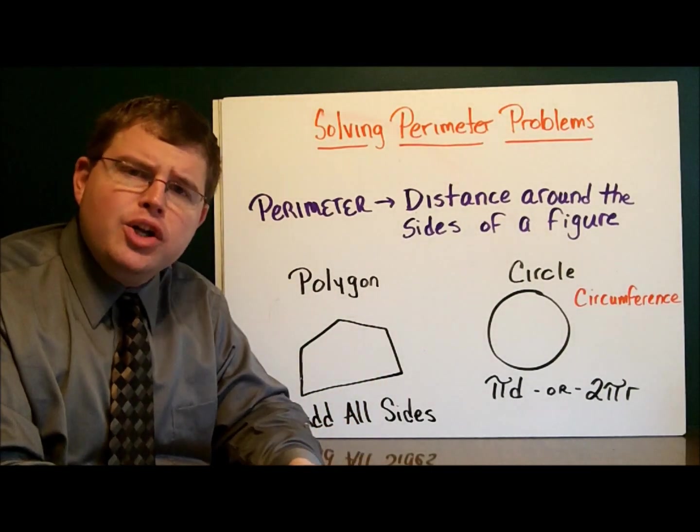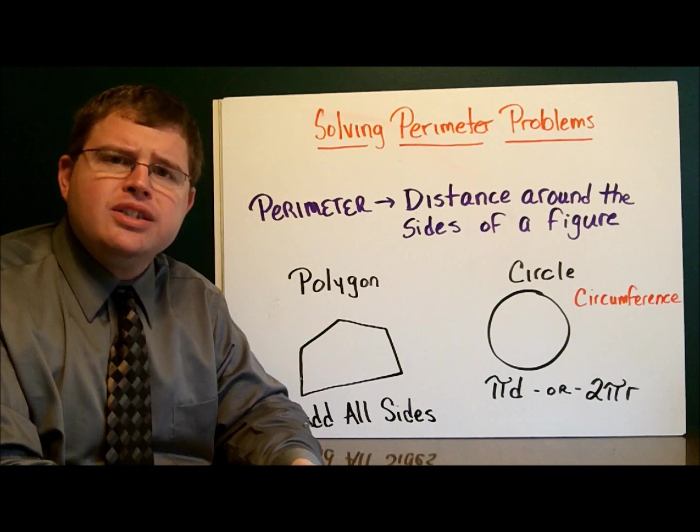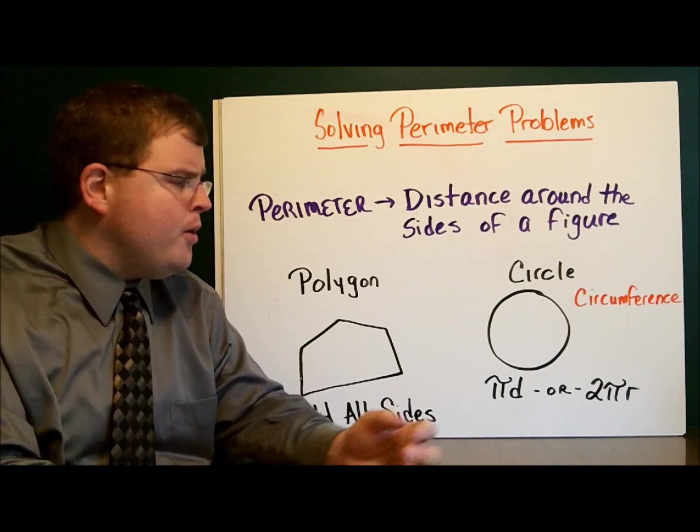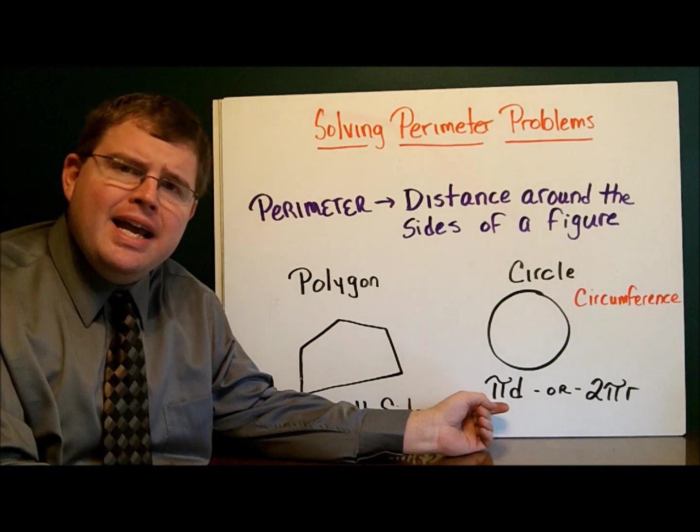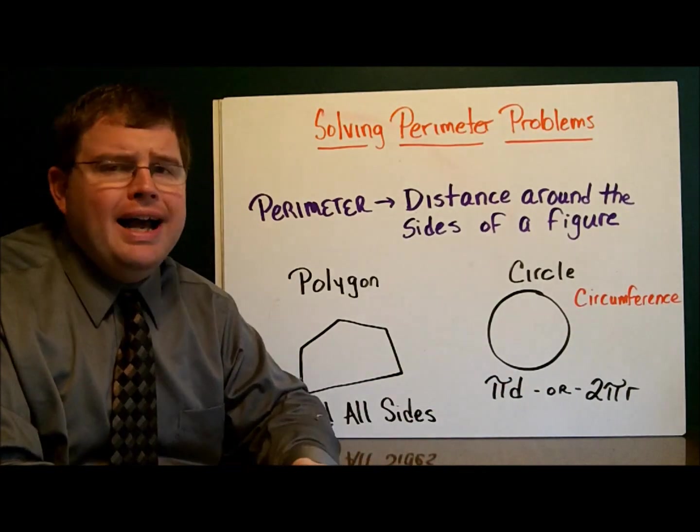The perimeter of a circle has a special name. It's called the circumference. And the circumference is found by the formula pi times the diameter, or 2 pi times the radius.